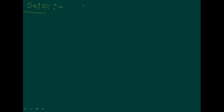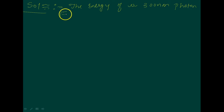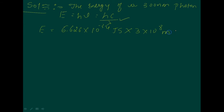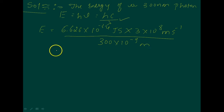Solution. The energy of a 300 nanometer photon — how to calculate it. E is equal to hν, and also E equals hc/λ. Applying this formula: E = 6.626×10⁻³⁴ joule·second multiplied by c, divided by 300 nanometer wavelength. Calculating this gives 6.626×10⁻¹⁹ joule — that is the energy of one photon.